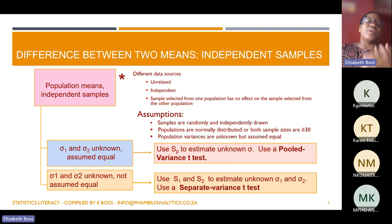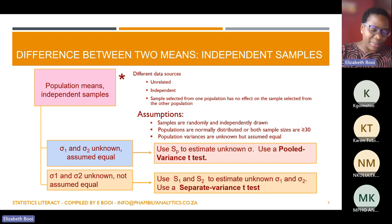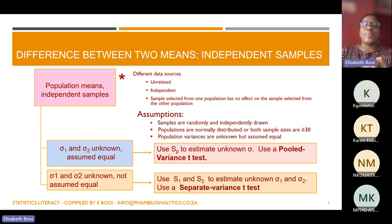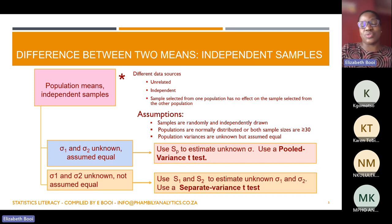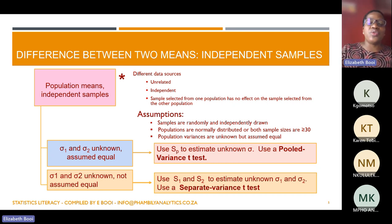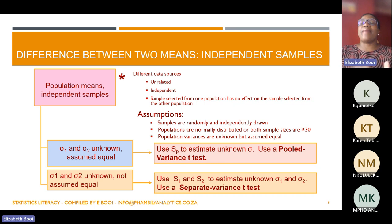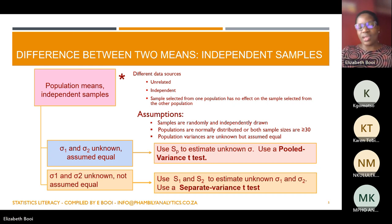If the population is not normally distributed, your sample size needs to be at least larger than 30. If your population variances are unknown but assumed to be equal, then you use what we call a pooled variance, which is denoted by Sp. If your population standard deviation is unknown and assumed to be equal, we're going to use the pooled variance t-test.